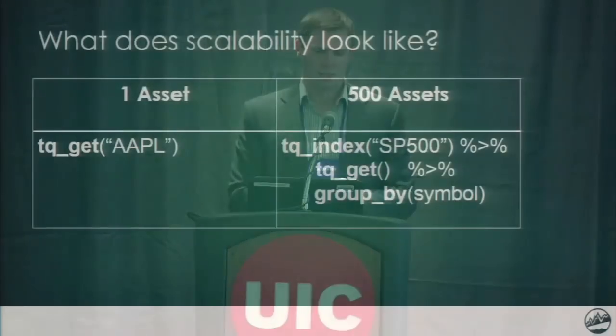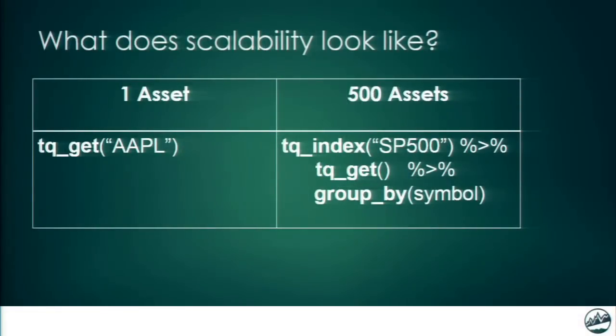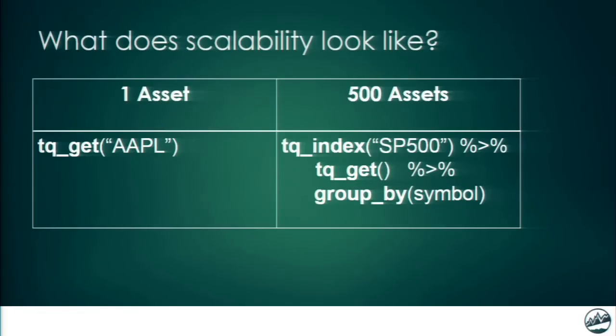The key benefit of TidyQuant is scalability — going from one asset to 500 assets is not that much different. So with just one asset, we'll take the stock ticker Apple, put it into TQ-Get, and out comes your 10 years of stock data, very similar to QuantMod's get symbols.